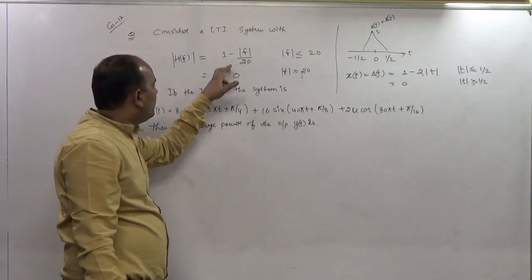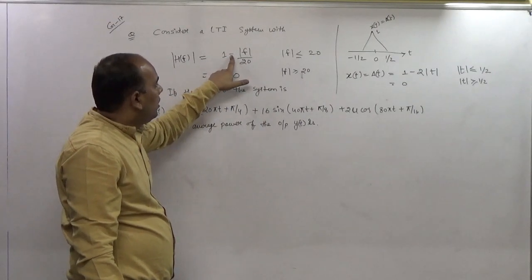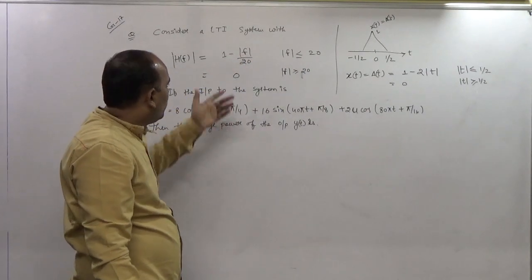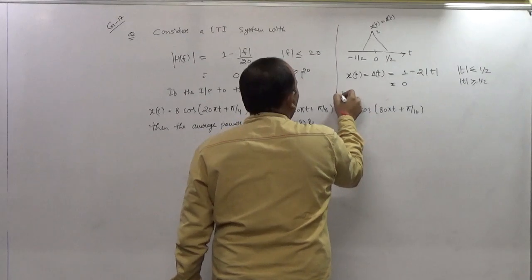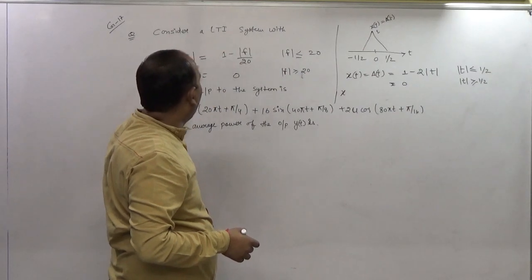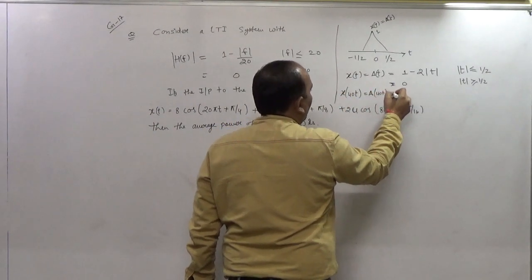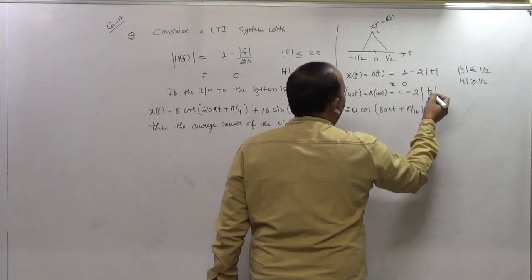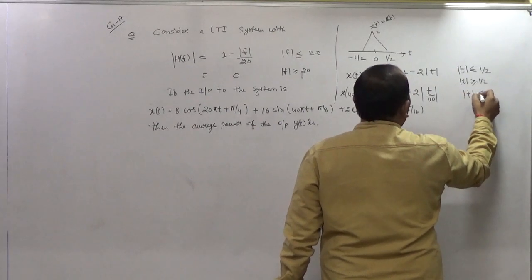For this question, the given |H(F)| is a triangular function but it is a scaled version. Instead of 1 - 2|T|, it is 1 - |F/20|. To get 1/20, we replace T with F/20, meaning we multiply by 40. So triangle of 40T gives 1 - 2|T/40|, and the limit also divides by 40, so |T| less than 20.